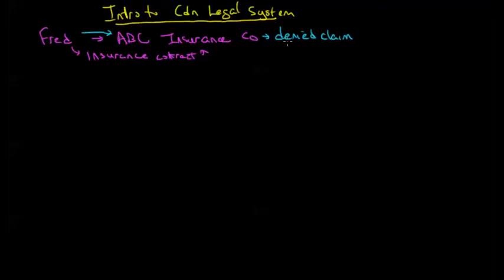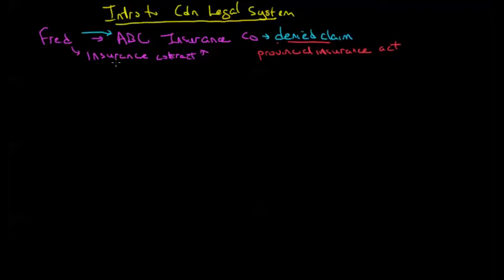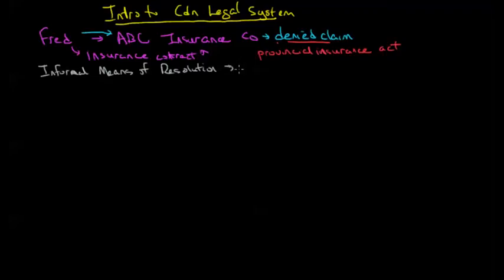This denied claim brings us to insurance legislation — almost certainly we would end up dealing under the Provincial Insurance Act for the province in which Fred is resident. Fred says he's not satisfied and tries some informal means of resolution. Today, courts often won't entertain Fred's claim unless he has tried informal resolution first. Most insurers have an ombudsman, and there would likely be a Provincial Insurance Ombudsman as well. He tries the various ombuds services available but does not get any satisfaction.